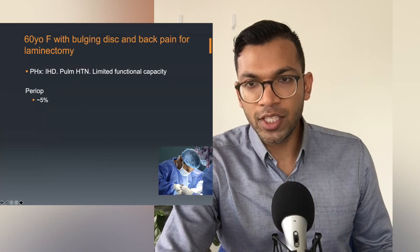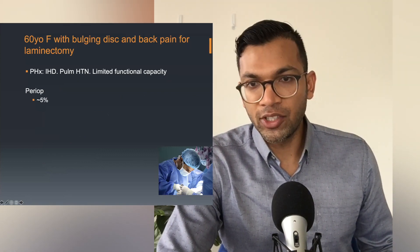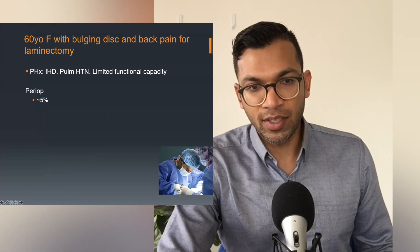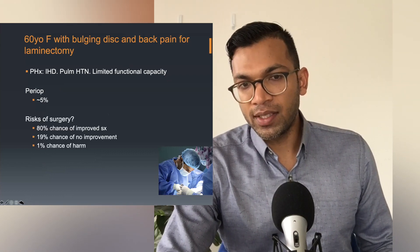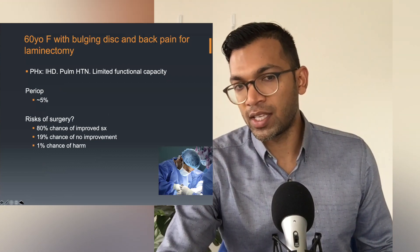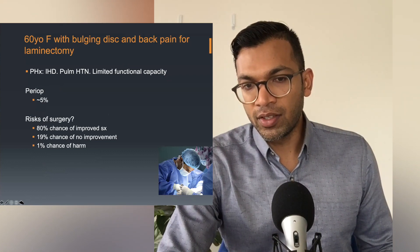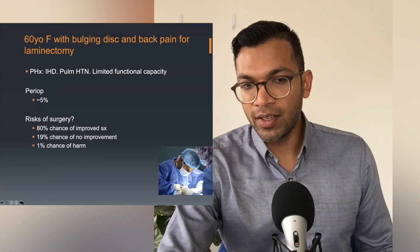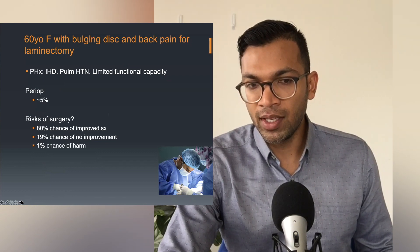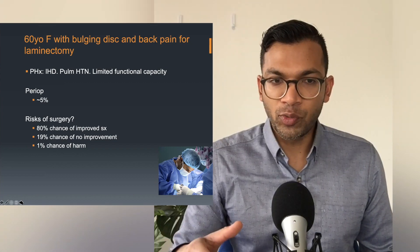In this particular case we've got a patient with a bulging disc and back pain for a laminectomy — these are real cases I've had over the years, slightly altered. When I plug this into the risk calculator, the perioperative risk is about 5% death plus other complications, the chance of surgery resulting in improvement is 80%, the chance of no improvement is about 19%, and the chance of harm is 1%.